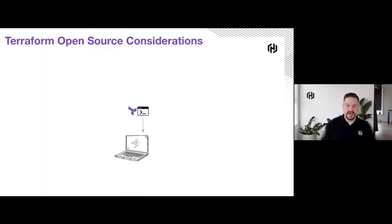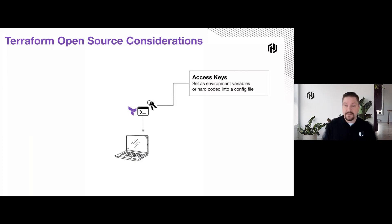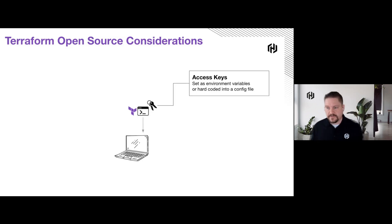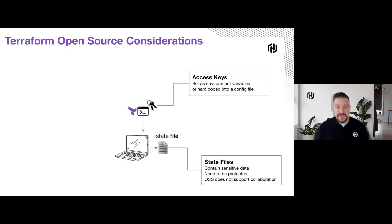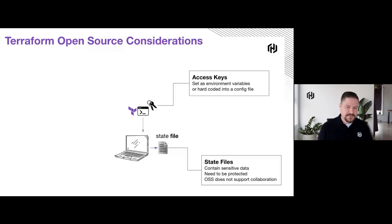There are some considerations as we start to look at Terraform open source and trying to scale. The first one is access keys — how are we going to deal with them? Traditionally, people put them in environment variables or hard-code them into a config file. The problem is we're tracked onto that one machine, and if somebody has access to the machine, we're one ENV command away from exposing all access keys, secret keys, or database secrets. Then there's the state file, which always contains sensitive data and is trapped on this machine — it doesn't really allow us to collaborate or bring other team members in.